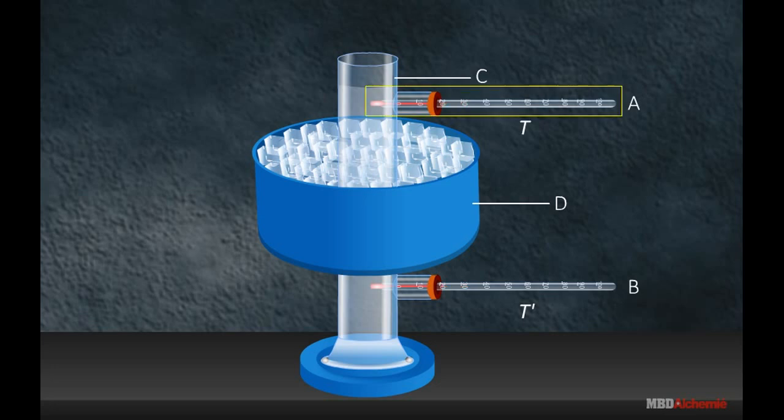the temperature reading T of the thermometer A begins to fall continuously till it reaches 0 degrees Celsius. And the whole mass of water in the region between the middle part and the upper part of the cylinder C freezes completely.